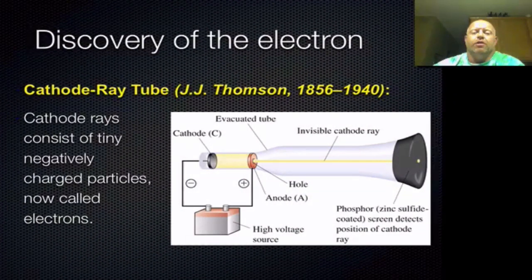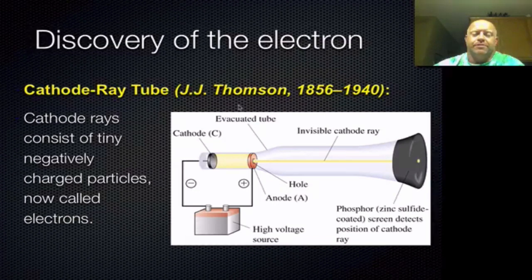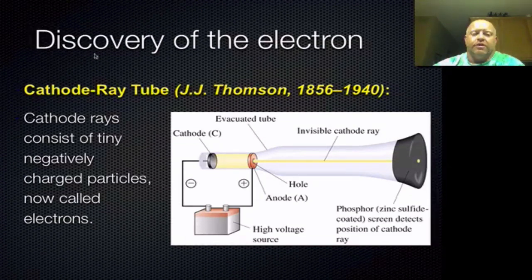Moving on from Dalton, we move into what was done next. In the late 1800s and early 1900s, we started doing experimentation, and the technology was catching up to some of the different ideas about what's possible inside the atom. One of those discoveries — actually the first one — was the discovery of the electron.